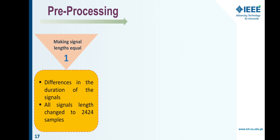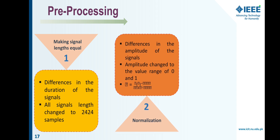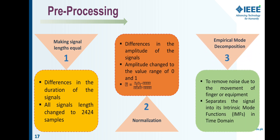In pre-processing, we noticed that our signals were different in length. First, we made each signal of equal length by converting all signals to 2,424 samples. Next, to have amplitude of the same range, we normalized the amplitude of all signals between zero and one using normalization. Finally, we applied Empirical Mode Decomposition (EMD) to remove noise, which may be produced due to movement of the finger or equipment. EMD decomposes the signal into its intrinsic mode functions (IMFs) in the time domain.